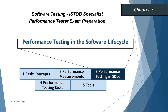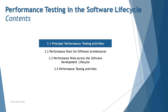Hello friends and greetings for the day. Welcome back to another tutorial on ISTQB Specialist Performance Testing Certification. We are in Chapter 3 today, which covers: 3.1 Principal Performance Testing Activities, 3.2 Performance Risk for Different Architectures, 3.3 Performance Risk Across the Software Development Life Cycle, and 3.4 Performance Testing Activities.